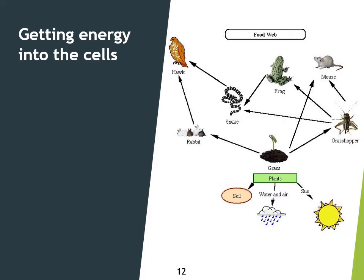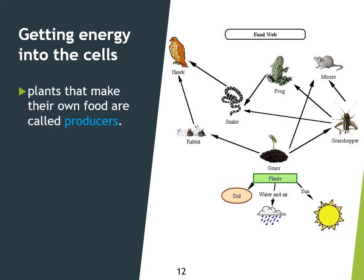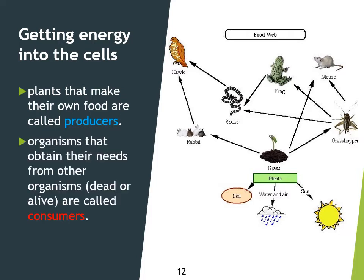That brings me back to the food web. The whole idea of the food web is that we're trying to get energy from each other, and where it starts from are the producers — the plants — which take energy from the sun, water, air, and nutrients in the soil to make their sugars using photosynthesis. Then you get consumers like the rabbit and the grasshopper eating the grass. Other consumers like the snake, frog, or mouse eat the grasshopper, and further up the food chain, the hawk eats the snake or the rabbit, getting those sugars through eating organisms that have eaten the grass.